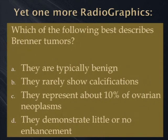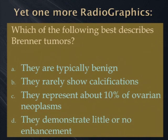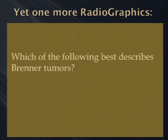Let's take a look at Radiographics one more time with a randomly chosen sample: 'Which of the following best describes Brenner tumors?' A: they're typically benign (prognosis). B: they rarely show calcifications (imaging finding). C: they represent about 10% of ovarian neoplasms (prevalence). D: they demonstrate little or no enhancement (imaging finding). We're flipping back and forth between random things. It may as well say 'what do you know about Brenner tumors?' If you do the cover test, that's actually what it is — total failure of the cover test.